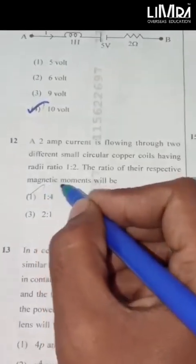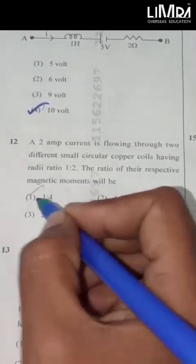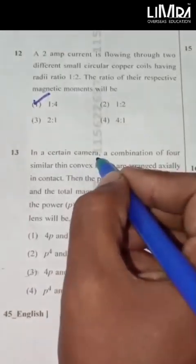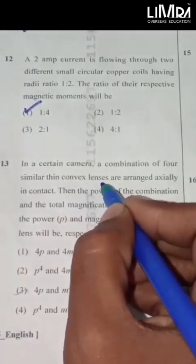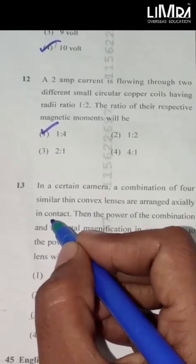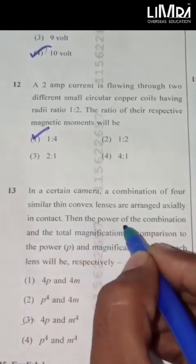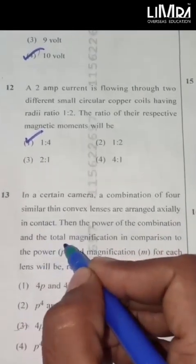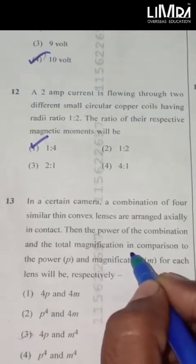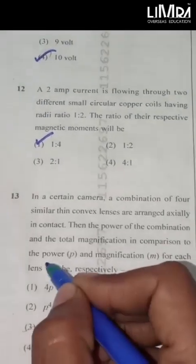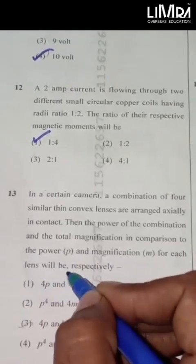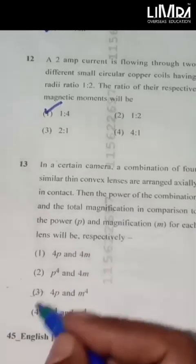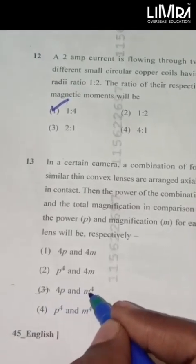In a certain camera, a combination of four similar thin convex lenses are arranged axially in contact. Then the power of the combination and the total magnification in comparison to the power P and magnification M for each lens will be respectively 4P and M power 4.